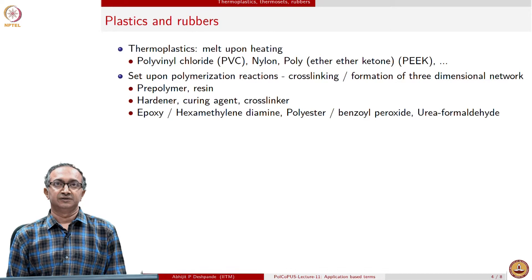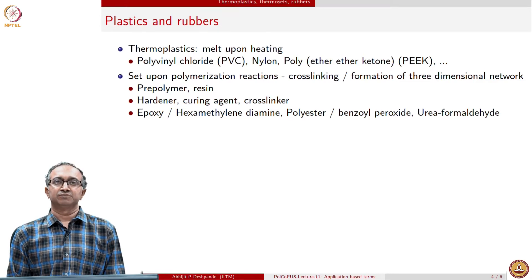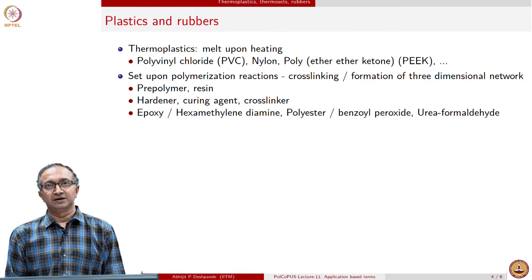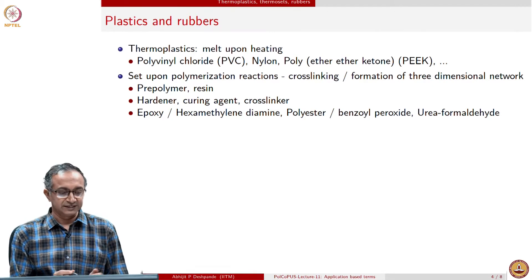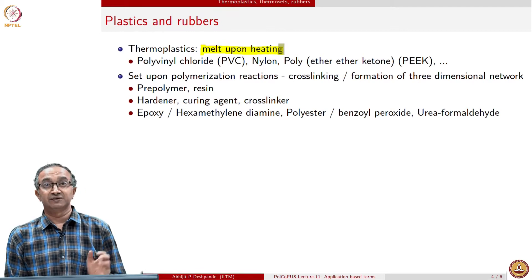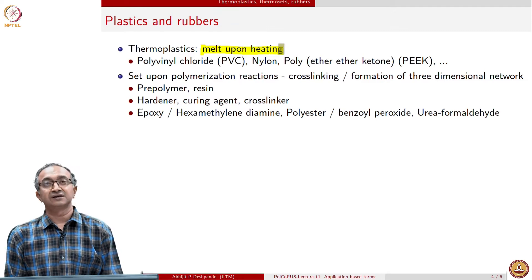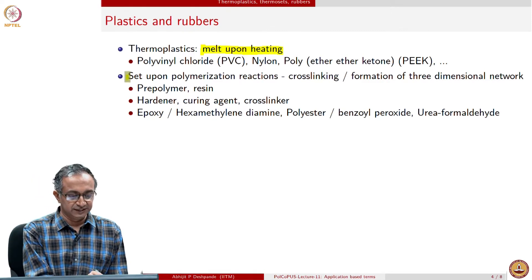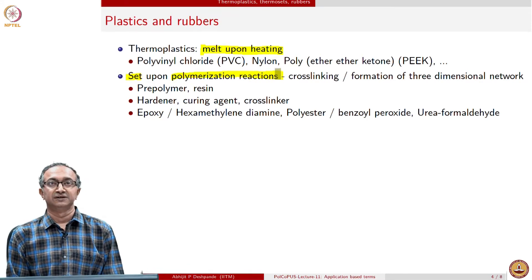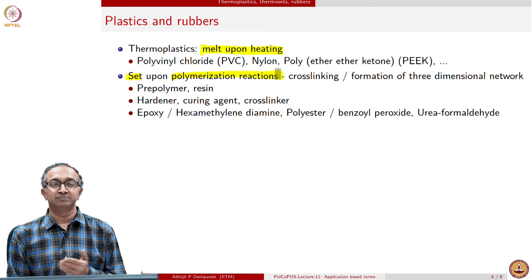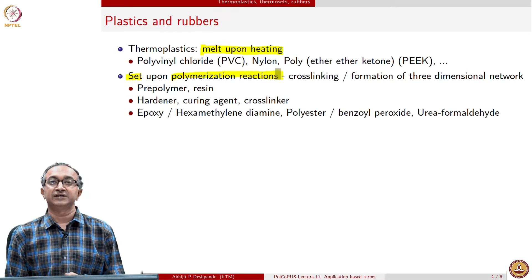Looking at the two broad terms related to plastics and rubbers: in common usage, both thermoplastics and thermosets are generically referred to as plastics. Thermoplastics are those which can melt upon heating, so whenever we talk of recycling, it is only thermoplastics we are referring to. There is another class called thermosets, which actually set when polymerization is complete. When fabricating thermosets, we must carry out reactions and then shape the material.